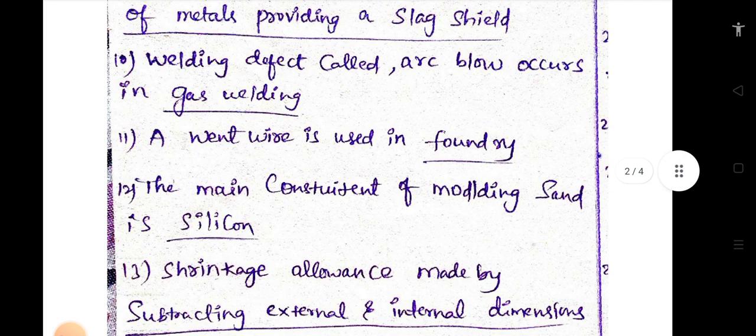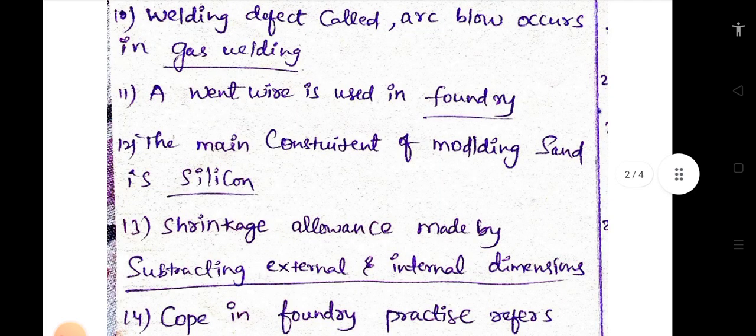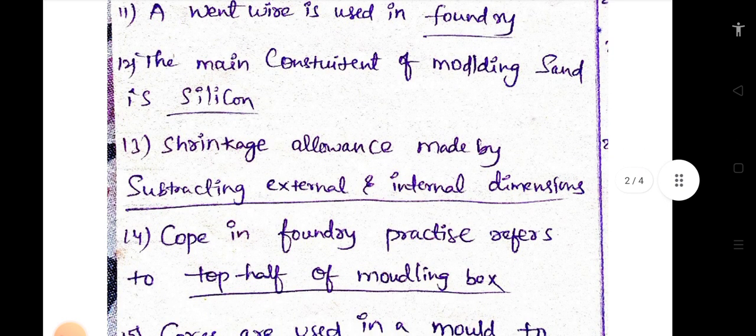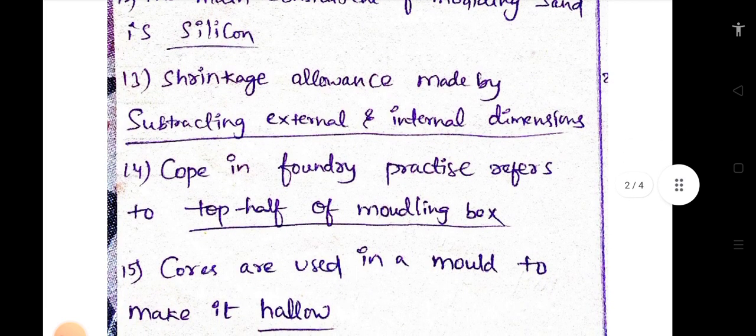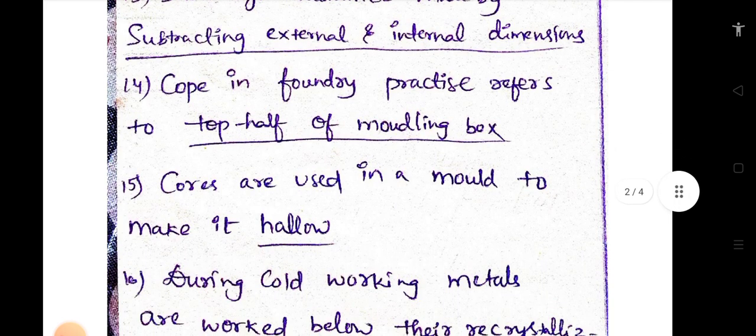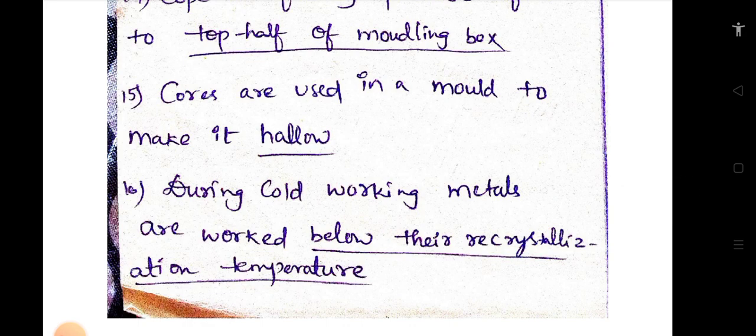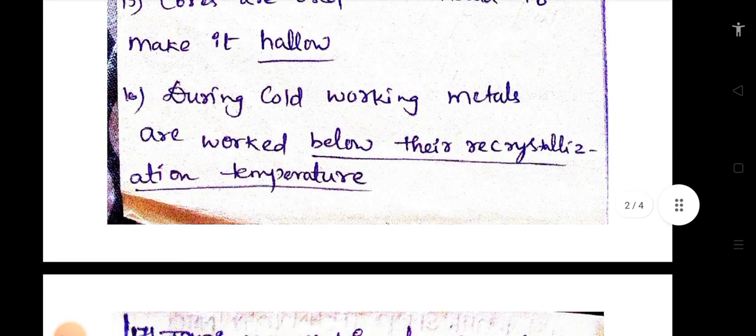Vent wire is used in foundry. The main constituent of molding sand is silicon. Shrinkage allowance is made by subtracting external and internal dimensions. Cope in the foundry practice refers to top half of molding box. Cores are used in mold to make it hollow. During cold working, metals are worked below their recrystallization temperature.